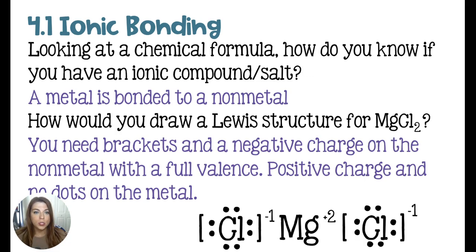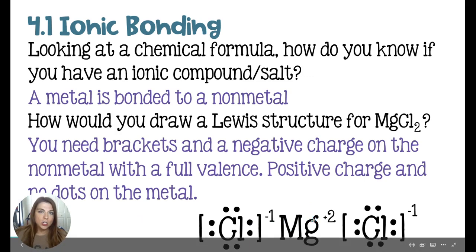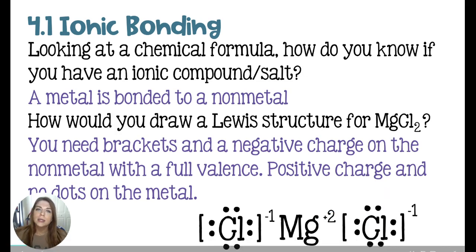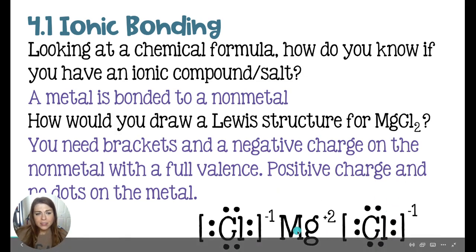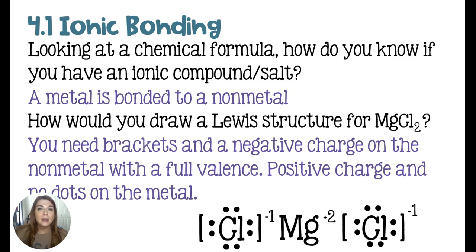In order to draw a Lewis structure for magnesium chloride, you would have magnesium with a plus two charge in the center between two chlorines, each with eight valence electrons, because magnesium is going to give one electron to each chlorine. Chlorine started with seven and now has eight. Magnesium is drawn with no dots because it has now emptied its valence shell. You could also draw this orientation vertically, but for the sake of space many of us write it left to right.